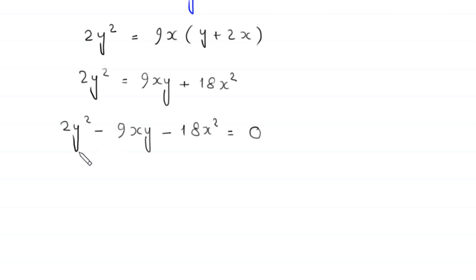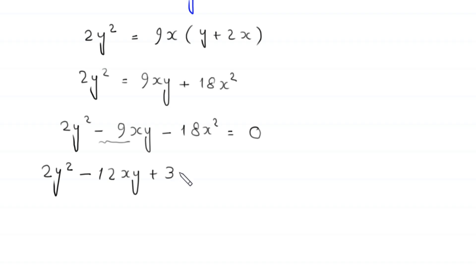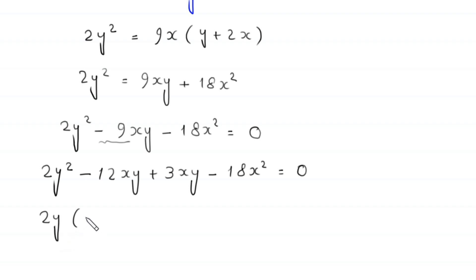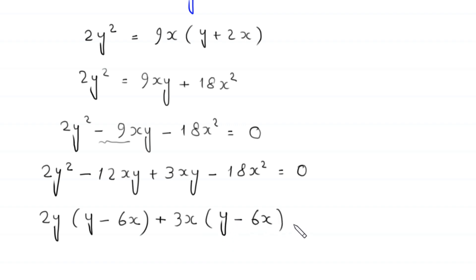Now this is a quadratic equation and is factorable. We write 2y² and split negative 9xy as negative 12xy plus 3xy, minus 18x² equals 0. From the first two terms, we can factor out 2y, leaving y minus 6x.